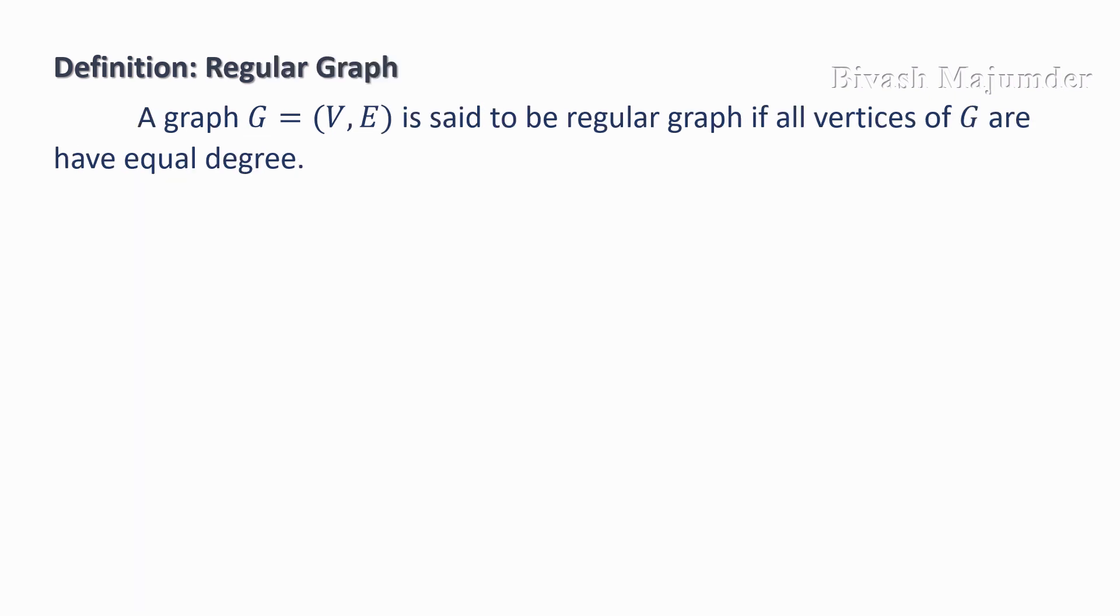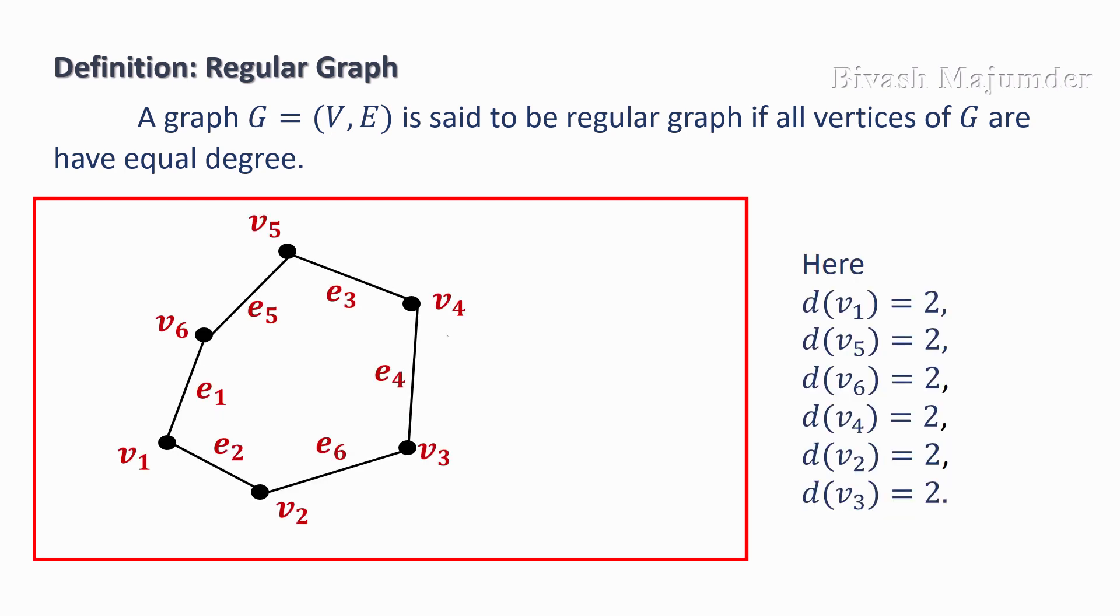Now, please look into the definition of regular graph. A graph G = (V, E) is said to be a regular graph if all vertices of G have equal degree. In this picture, as you can see, the degree of each vertex is 2.